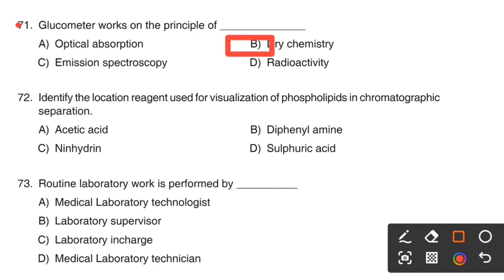The right answer is Option B, Dry chemistry. Glucometer works on the principle of dry chemistry.